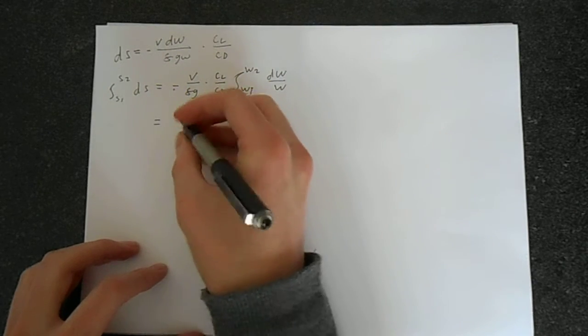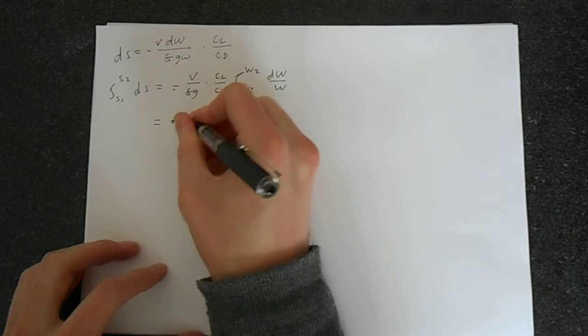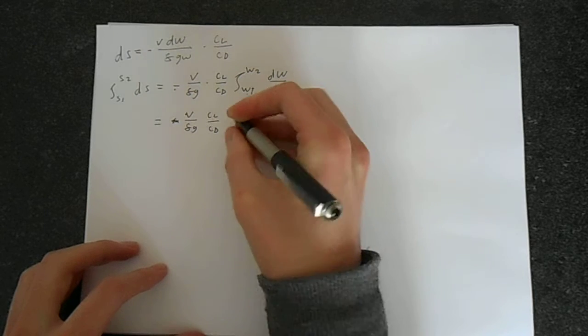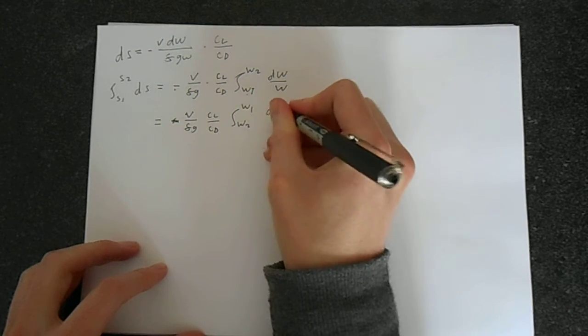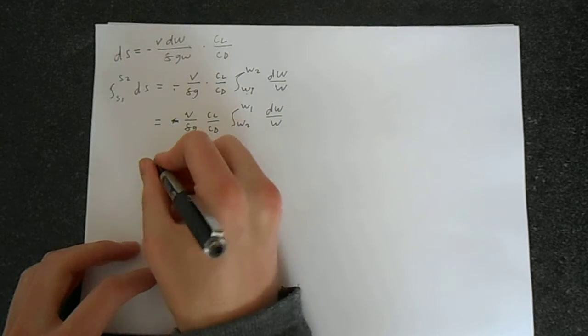So this is equal to minus - so note, minus is gone. You'll see why - v over f g times c_l over c_d. Change the integral from W_2 to W_1, dW over W. That's why the minus went. We've switched this round.